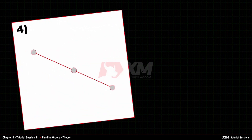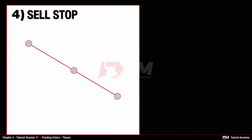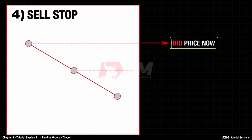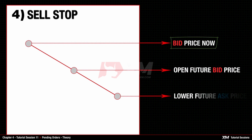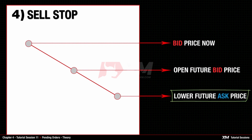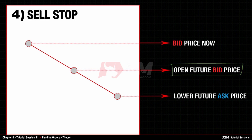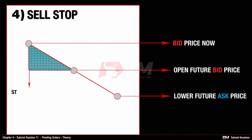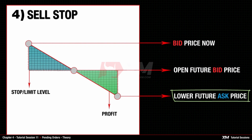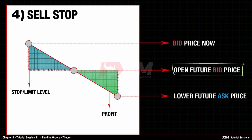The fourth type of pending order is Sell Stop. All Sell orders are opened at the Bid price and closed at the Ask price. Sell Stop orders should be opened at the lower future Bid price. To make a profit on Sell Stop orders, the Closing Ask price needs to be lower than the opening Bid price.